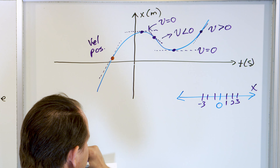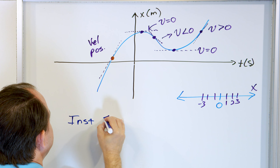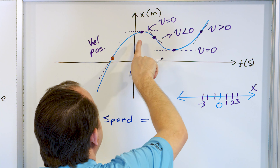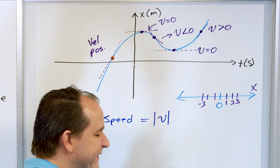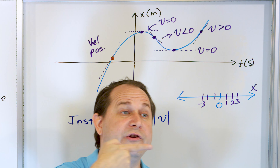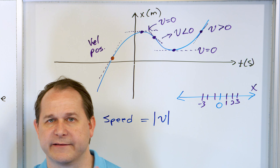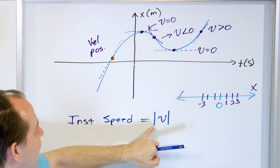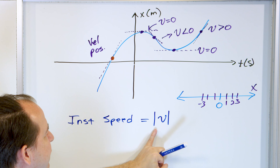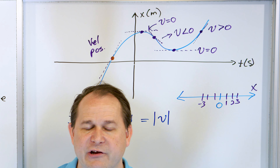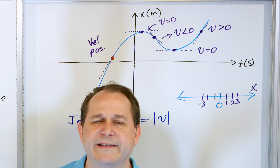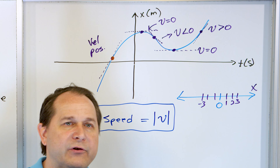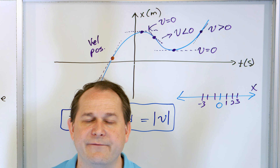Before we get to an example, I want to talk about instantaneous speed. Instantaneous speed equals the magnitude — the absolute value — of the velocity. Sometimes the velocity is zero, sometimes positive, sometimes negative, so velocity has a sign that tells you which way it's going. Velocity is a vector because it carries direction information. Speed is how fast you're going regardless of direction — you take the absolute value and strip away the sign. The instantaneous speed is simply the velocity number with no sign information.